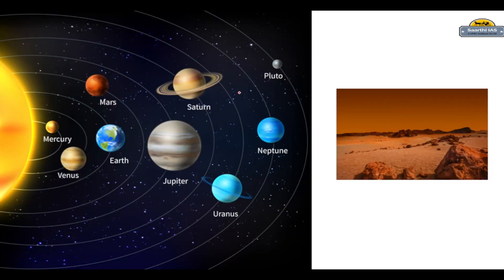Let us begin with the solar system. As you all know, in the solar system all planets revolve around the sun. It is a system in which the sun and its family — the sun and its planets — are in the shape of a family. Mercury is the closest planet to the sun, and this planet doesn't have any moons or rings.